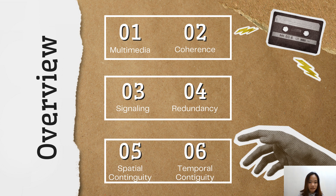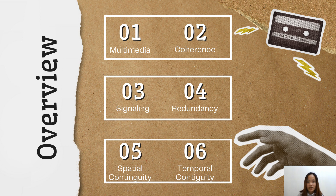First, let's have an overview of the first six principles of multimedia design by Richard Mayer. Number one is the Multimedia Principle. Number two is the Coherence Principle. Number three is the Signaling Principle. Number four is the Redundancy Principle. Number five is the Spatial Contiguity Principle, and number six is the Temporal Contiguity Principle. Principles seven through twelve will be discussed by Sir Angelica, who will cover how to apply all of those when designing your own materials.